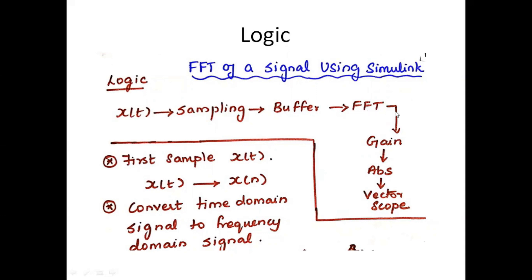Then we have to multiply with the gain. If you see the result of this FFT, it has both real and imaginary components, so we have to find the absolute. Using the Vector Scope, we can see the simulation result.